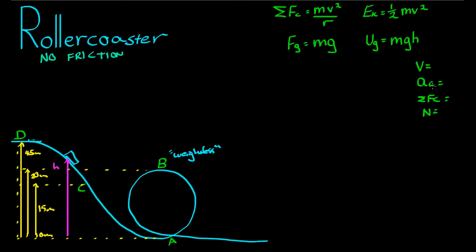So we're going to find V, AC, this and this at B, then A, then the mystery height. So we'll start at B.